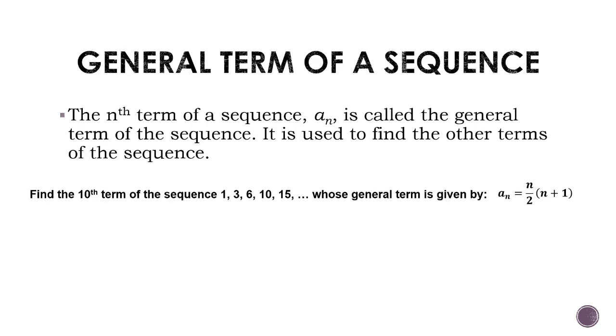Let's proceed to the general term of the sequence. A general term or the nth term is used to find the other terms of the sequence. The general term is an equation or formula used to get the unknown terms of a given sequence. Let's try this example: Find the 10th term of the sequence 1, 3, 6, 10, 15, and so on, whose general term is given by a sub n equals n over 2 times n plus 1. First, let's familiarize ourselves with the notations. A sub 1 is first term, a sub 2 is second term.